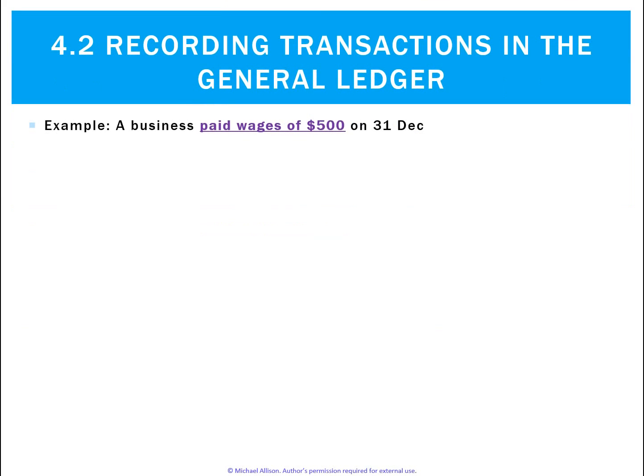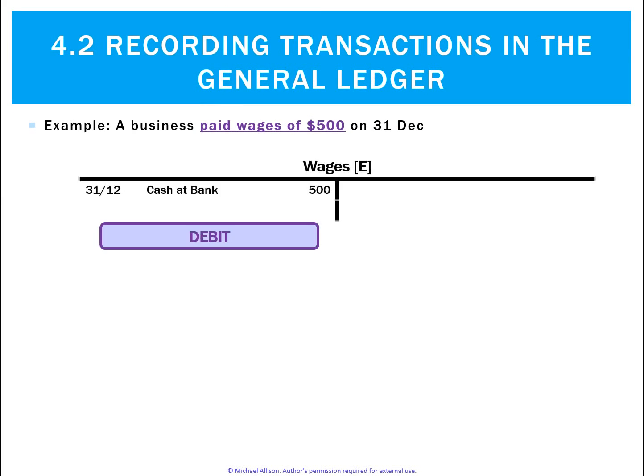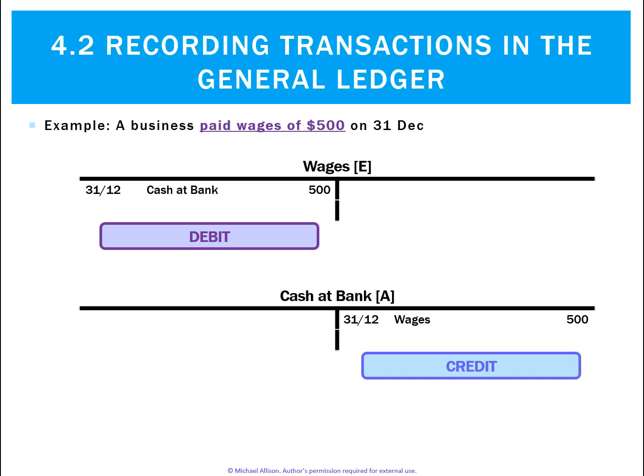What about the next transaction, which is a business paid wages of $500? In that instance, we have wages going up on the debit side and cash at bank going down on the credit side.